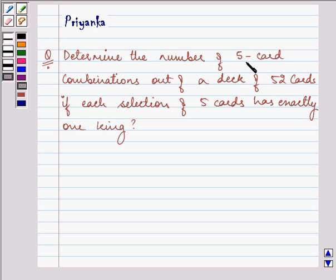The question says: determine the number of 5-card combinations out of a deck of 52 cards if each selection of 5 cards has exactly one king.